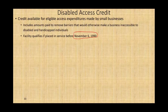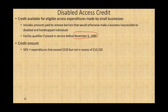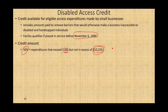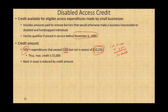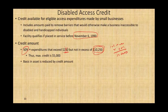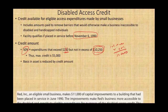The credit amount is 50% times the expenditure. You have to spend more than $250 but not more than $10,250. You could spend more than $10,250, but the credit is 50% of the amount up to $10,250, not counting the first $250. Simply put, it's $10,000 times 50%, which is $5,000 — so the maximum credit amount is $5,000. The basis in the asset is reduced by the credit amount. We reduce the basis because you cannot have the credit and keep your basis up. You get the credit, you reduce your basis, so when you sell the building the gain is recaptured.